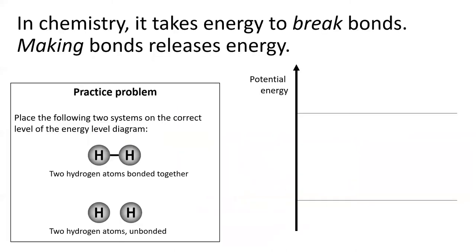Time to practice this yourself. We'll see a lot of chemical bonding in this course. To break a chemical bond, you have to put in energy. When a chemical bond is formed, on the other hand, energy is released. Try placing the following two systems on the energy level diagram to the right.